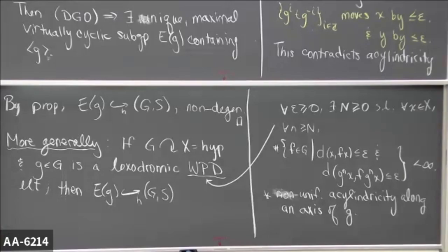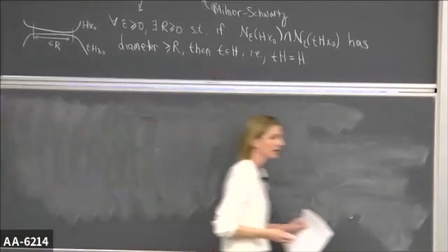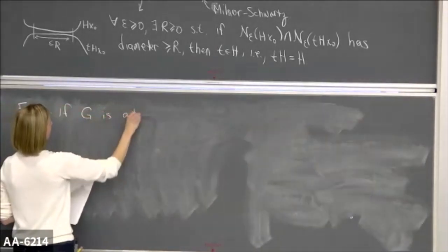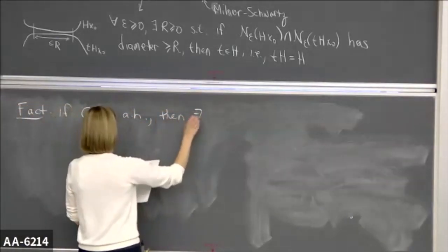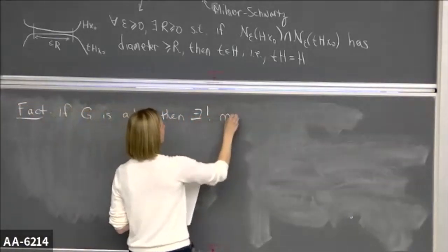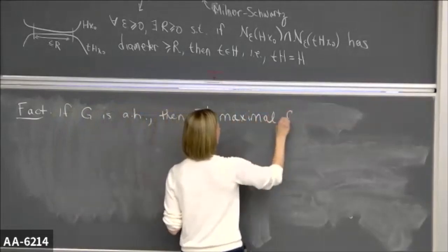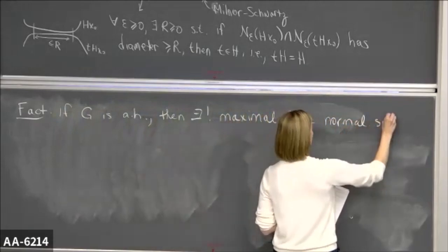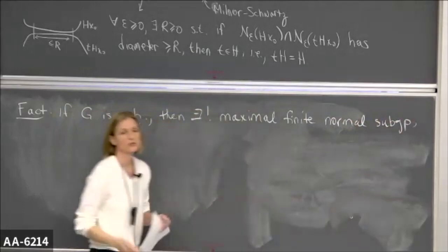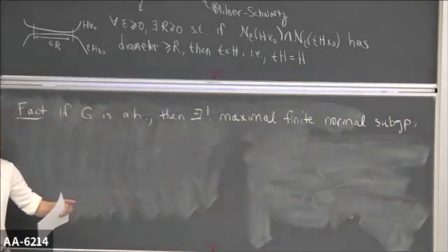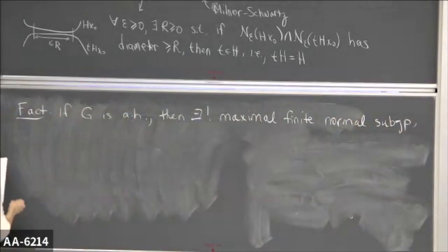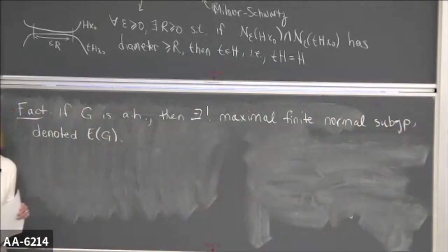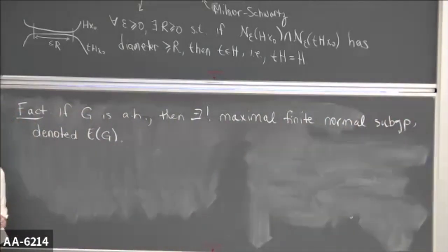Just one fact before I turn to the other direction, two implies one. If a group is acylindrically hyperbolic, then there exists a unique maximal finite normal subgroup of the group. So if you look at all the finite normal subgroups ordered by subgroup inclusion, there's a unique maximal one. We denote it capital E(G) — sometimes capital K(G), depending on the paper.